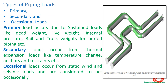Different types of piping loads are generally divided into three categories: primary loads, secondary loads, and occasional loads. Primary loads are the self-loads of the system. These include the dead weight of the pipe, the live weight due to fluid moving through the pipe, internal pressure — since pressure equals force upon area — and rail and truck weights for buried piping.